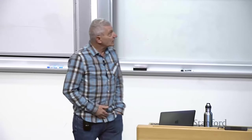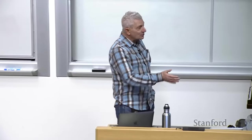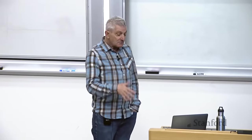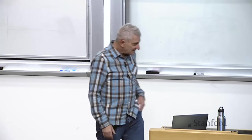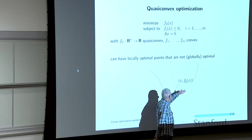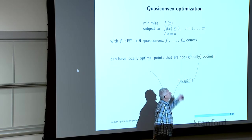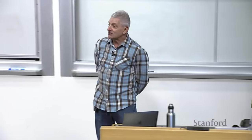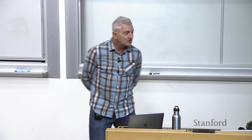Today we're going to finish this whirlwind tour through problems — different types of problems, formulations, and named problem classes. Last time we stopped at quasi-convex optimization, where you minimize a quasi-convex objective. You should be a little worried because the most important fact about convex problems — that you can't have a local minimum that's not a global minimum — is false for quasi-convex optimization. So you have to be a little more careful.